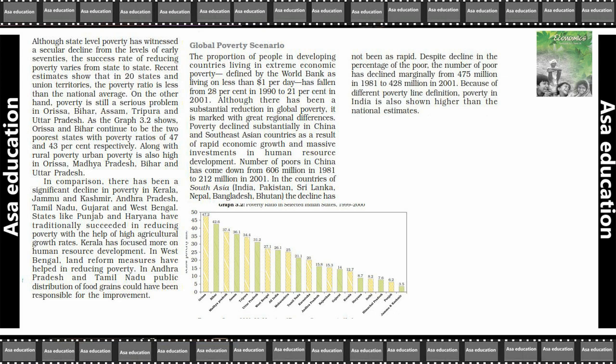Although there has been a substantial reduction in global poverty, it is marked by great regional differences. Poverty declined substantially in China and Southeast Asian countries as a result of rapid economic growth and massive investments in human resource development. The number of poor in China came down from 606 million in 1981 to 212 million in 2001.